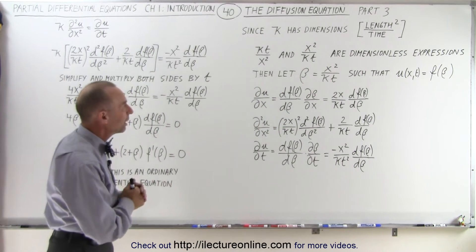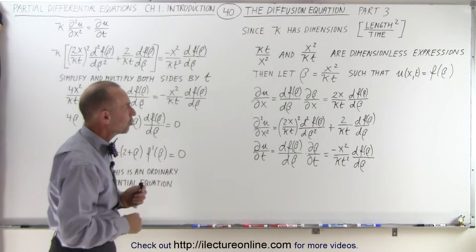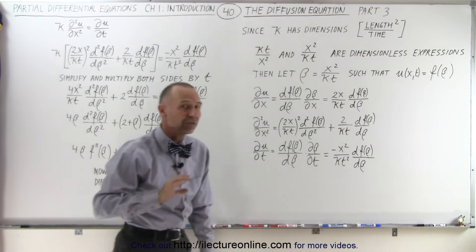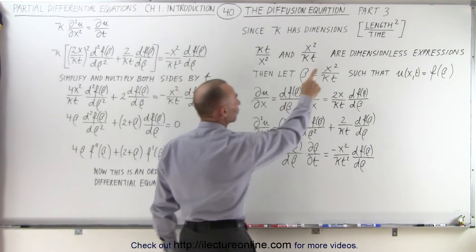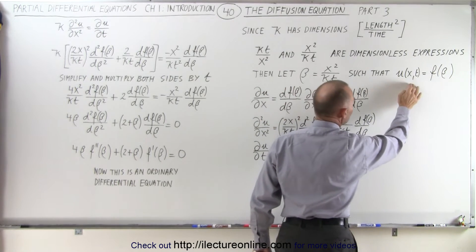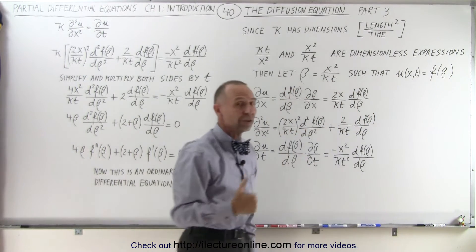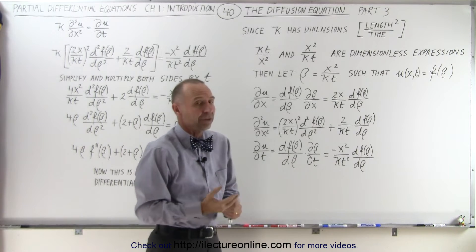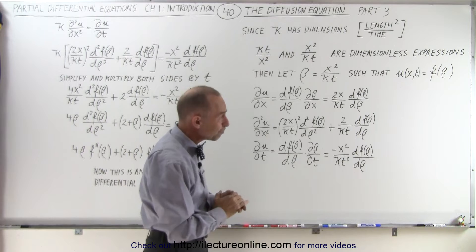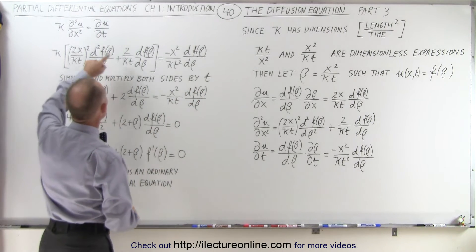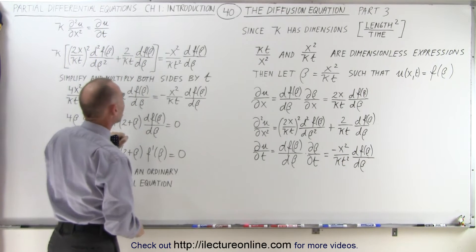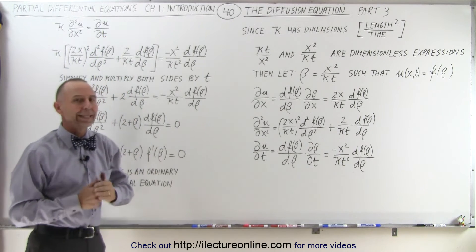We're going to make a similar substitution as before. We're going to let beta equal x squared over kt. In the previous video, we let alpha equal x squared over kt. We have a function u of x and t, which equals a function of beta — previously it was a function of alpha. The difference is that in the previous video, we let the right side of the equation equal a constant.